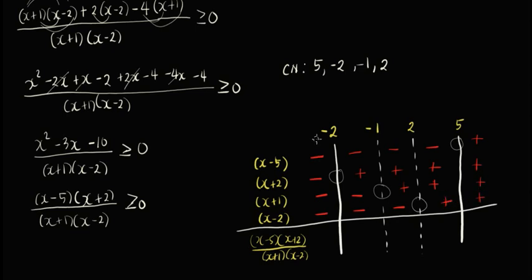So, bilangin ninyo lang — kapag ang dami ng minus sign ay even, so it's plus; pag odd, it's minus. So it's 4 minus signs, so it's a plus. Tatlo lang yung minus, so it's negative. 1, 2 — so positive. It's negative, and then positive.